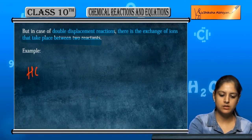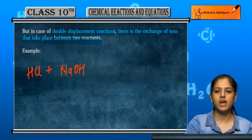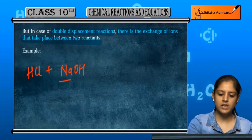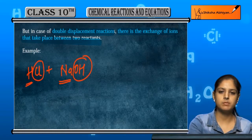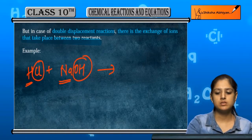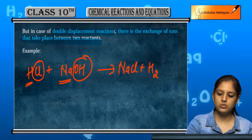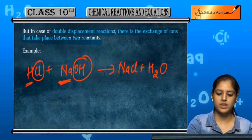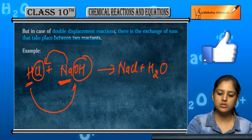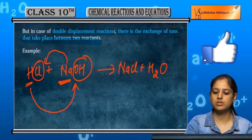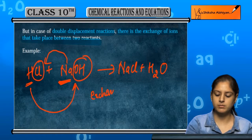For example, if HCl and NaOH both react, then Na combines with Cl and H combines with OH. When this reaction happens, NaCl and H₂O form. This is the exchange of ions taking place.